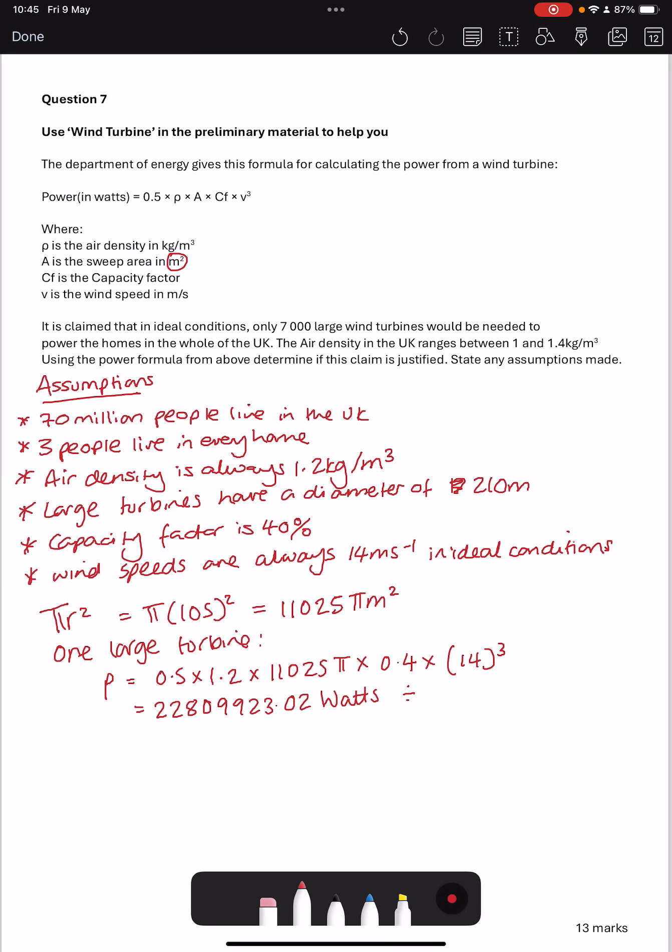Which gives me 22809923.02, and that's in watts. The preliminary material talks to me about homes which can be powered per megawatt. So I need to convert that to megawatts. And to do that, we divide by 1 million. So one turbine will do 22.809 megawatts from one turbine.